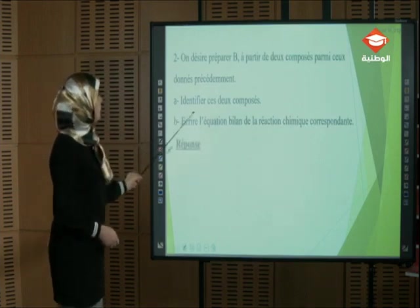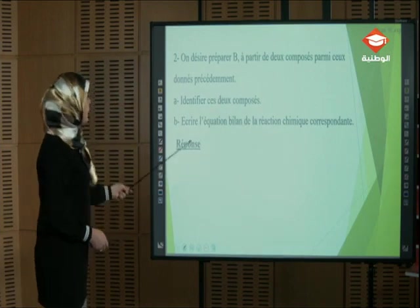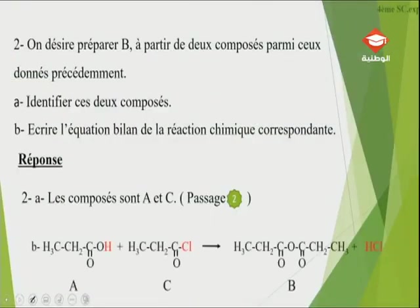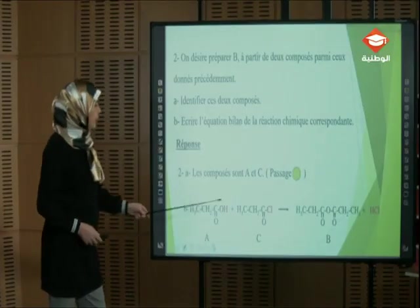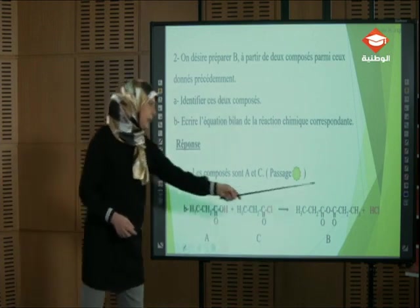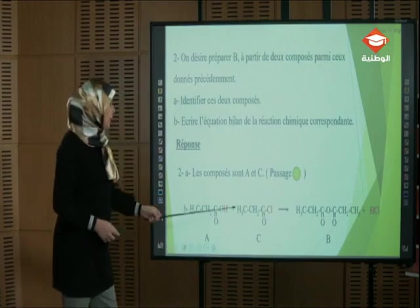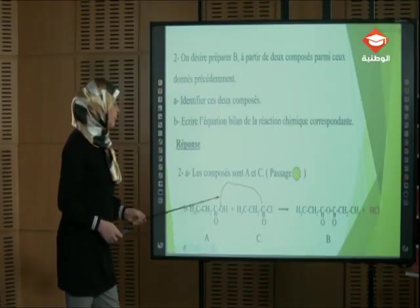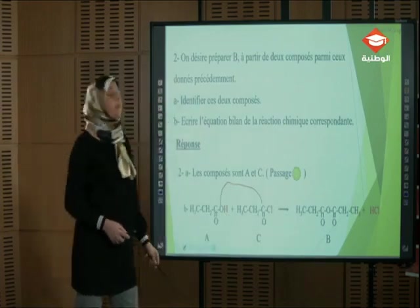Équation : le composé A (acide carboxylique) réagit avec le composé C (chlorure d'acide). Le chlore et l'hydrogène donnent le chlorure d'hydrogène. Le reste s'associe — ce carbone va s'associer à cet oxygène — pour former le composé B (l'anhydride d'acide).